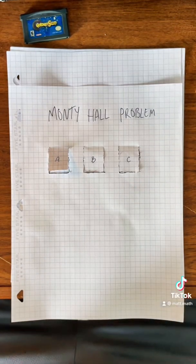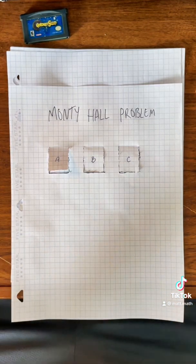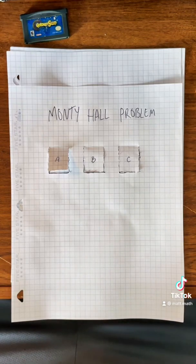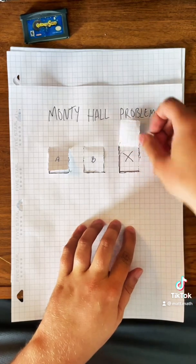And the host is going to go, okay, that's cool. So right now you have a one-third shot of getting the car right off the bat. That's actually pretty good. But the host then says, let's spice this up a little bit, and we're going to say that door C has nothing behind it. We're going to reveal that.